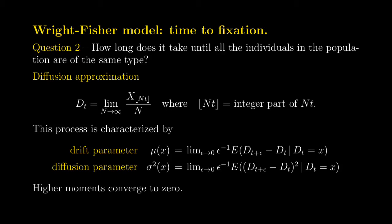The second natural question about the Wright-Fisher model that we are going to answer in this video is about the time to fixation — more precisely, how long does it take until all individuals in the system are of the same type. It turns out that computing the expected value of this time to fixation is pretty complicated for the Wright-Fisher model itself when N is fixed. Instead, we will answer the same question for a new process called the diffusion approximation of the Wright-Fisher model.